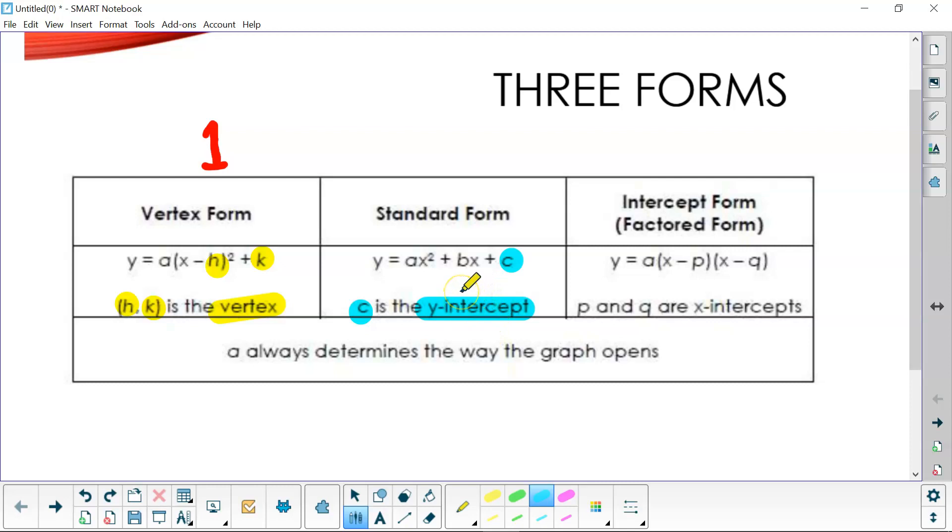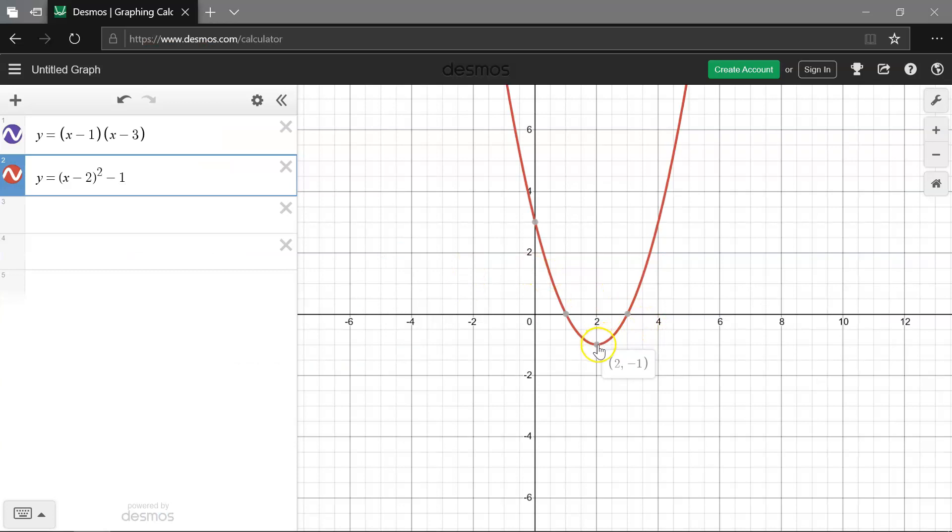If we look at a Desmos graph, this down here would be your vertex right here, and your y-intercept would be up here where the graph crosses the y-axis.